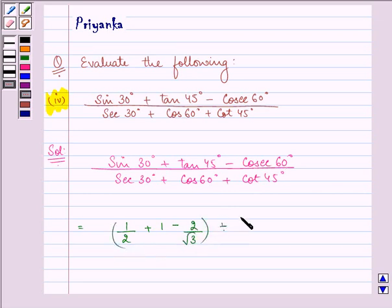It is getting divided by sec 30 which is 2 by root 3, plus cos 60 which is 1 by 2, plus cot 45 degree that is 1.